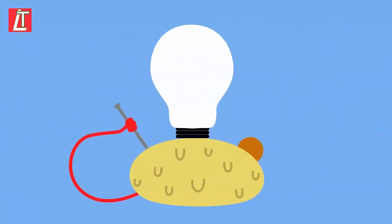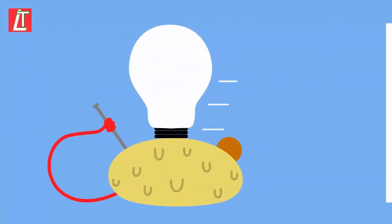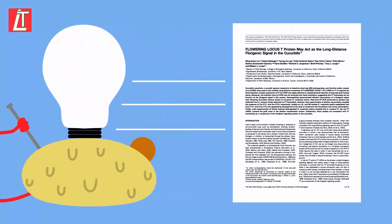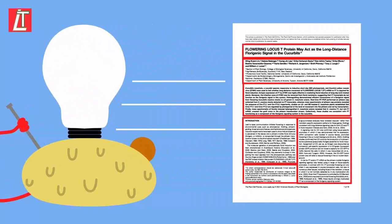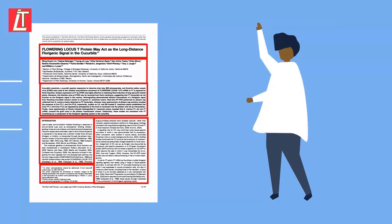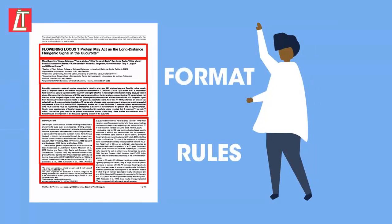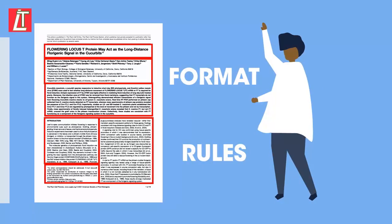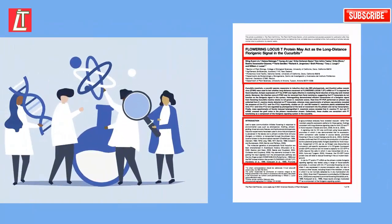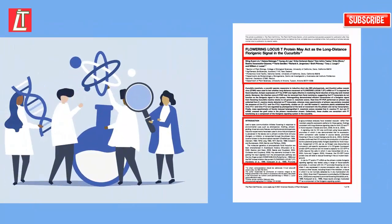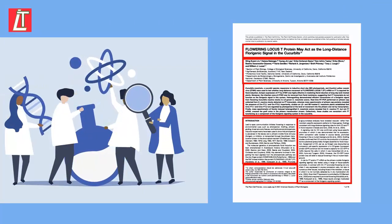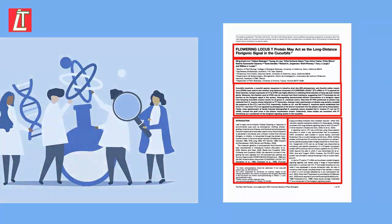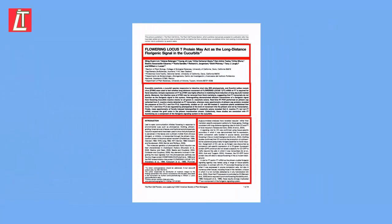When the results of the investigation are written up into a paper to be published, a set format is followed. Scientists must follow the format and rules of the journal where they intend to publish their work, so that other scientists can read and review their paper.